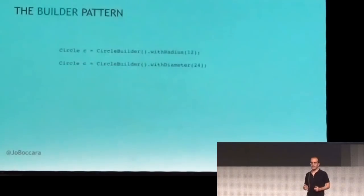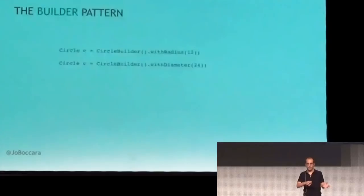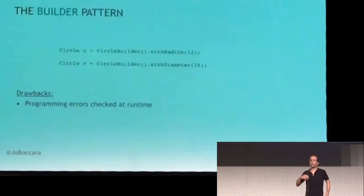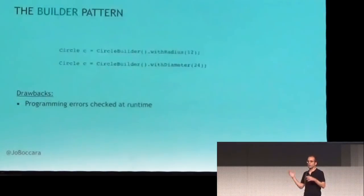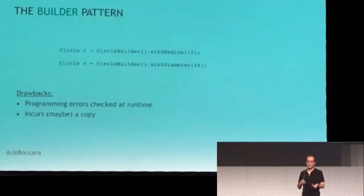The first alternative is using the builder pattern — a class that has setters you can chain up. Every setter sets a value and returns a reference to the object itself. You can chain them up and build the thing progressively. So we have setters instead of constructors and that works. But it has drawbacks: if there are things that have to be in a circle, like a radius, color, and thickness, we can only check that it's complete at runtime. And depending on the implementation, we may have a copy.